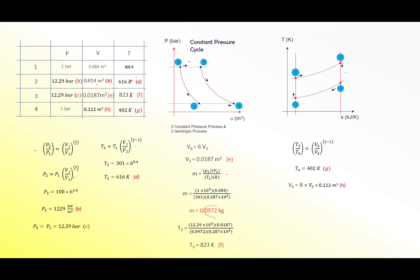V4 to V2 is the overall volume ratio given in the question. When they say overall volume ratio, you always refer to the outermost and innermost volumes on the PV diagram. For overall pressure, you refer to the outermost pressure lines. In this case that is points 4 and 1, giving the overall volume ratio. That equals 8, so you can find V4 equals 0.112 metre cubed.